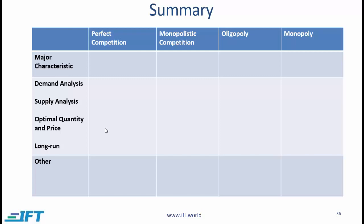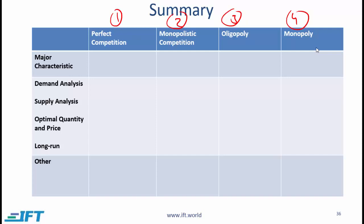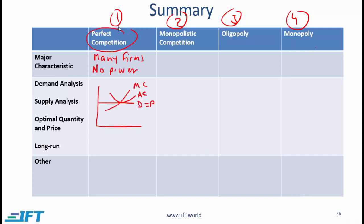We are done with all the market structures. I will now deviate from my regular summary slide and talk about the major aspects of our four different market structures. I want you to first think about filling this table as an indicator of how much you have remembered, and then I will walk you through the major aspects for all different types of market structures. In a market characterized by perfect competition, there are many firms and each firm is small relative to the overall market.